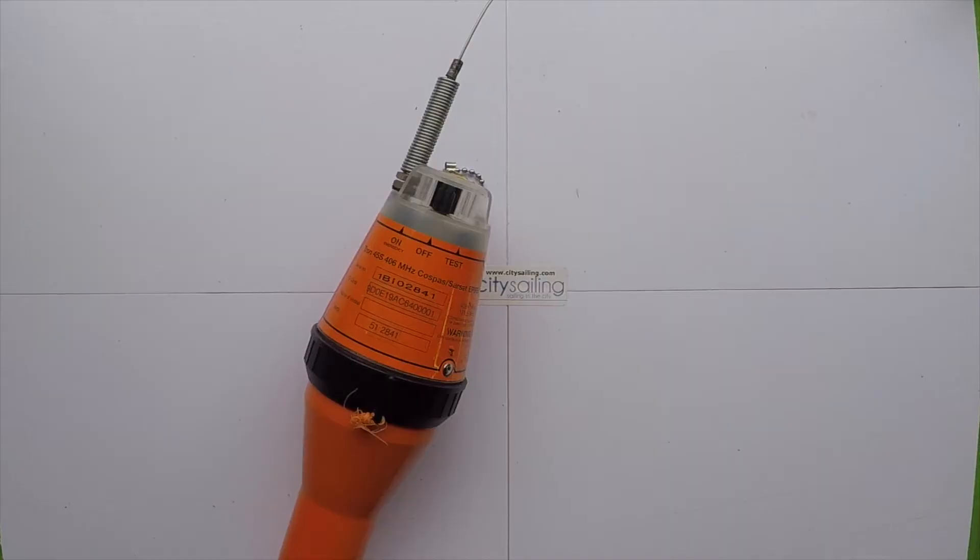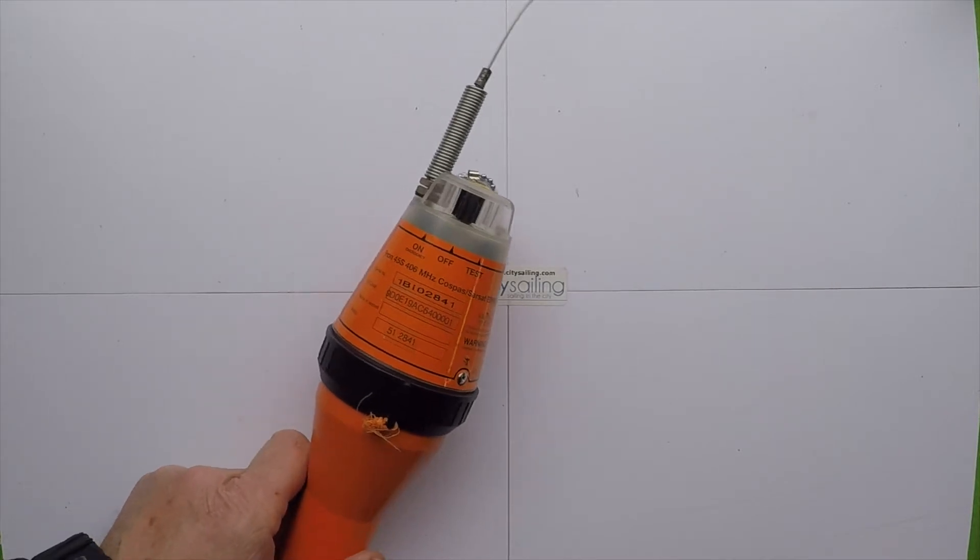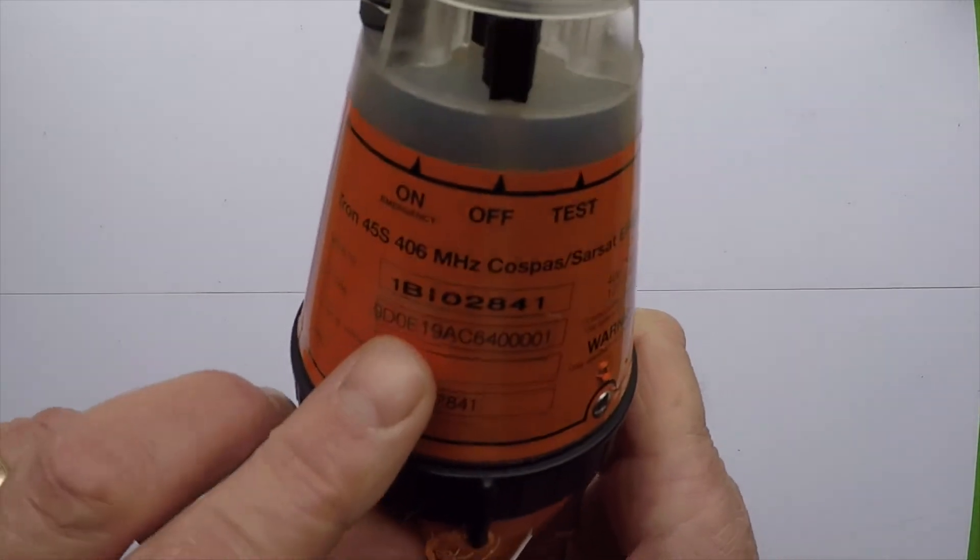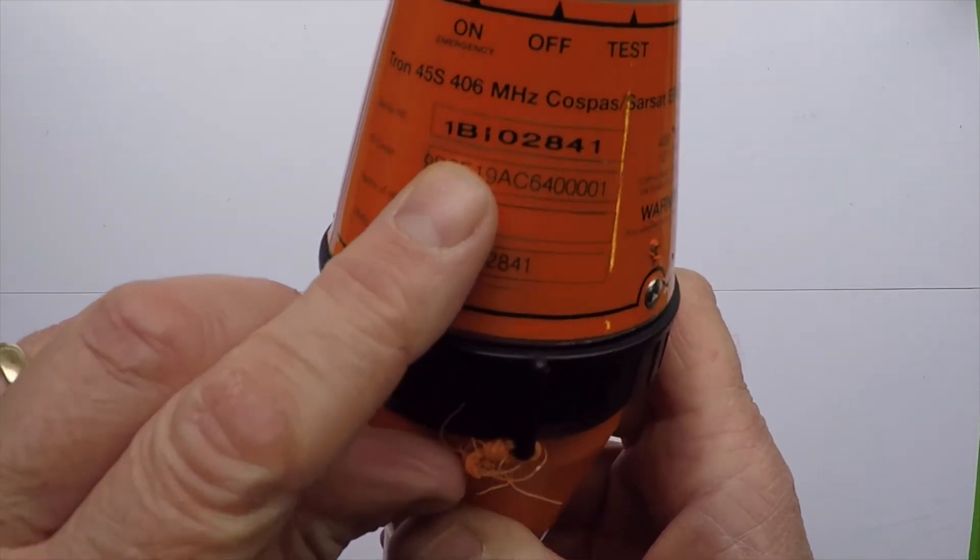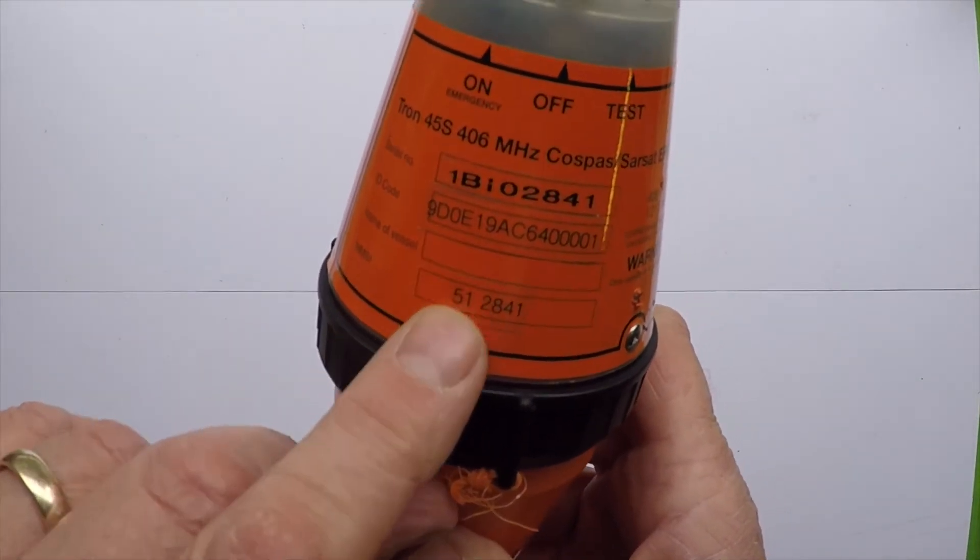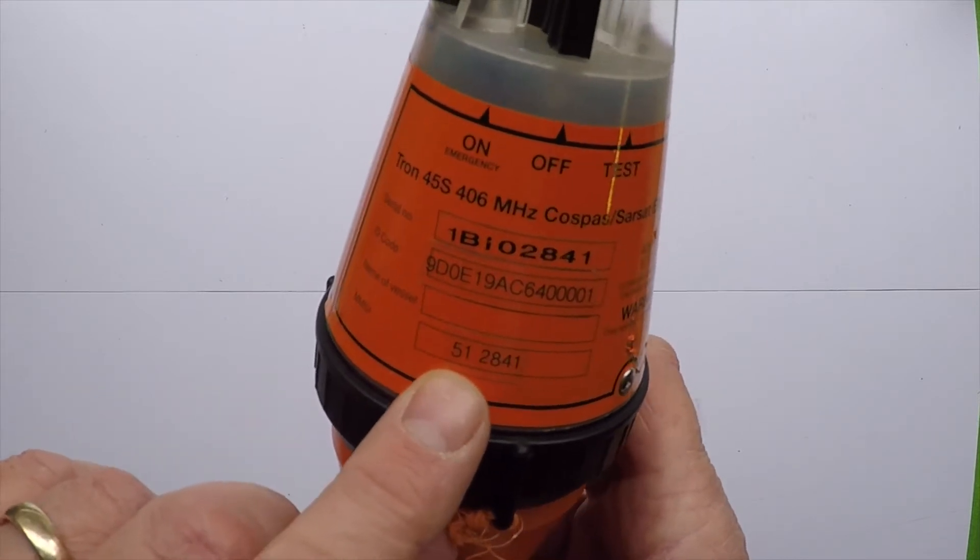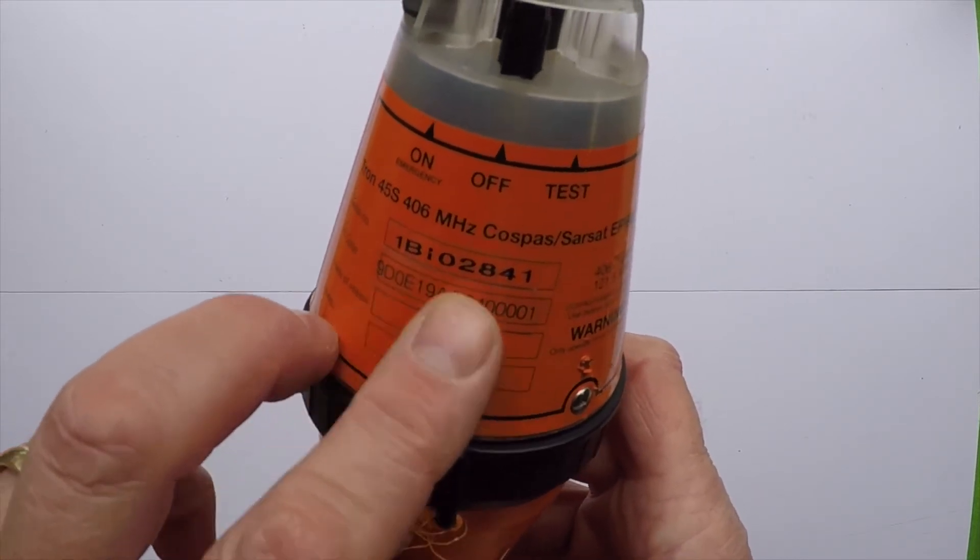I want to talk about EPIRBs - emergency position indicating radio beacon. This is a real EPIRB which I've decommissioned. As we can see here, it has a serial number, an ID code, and MMSI number, and the serial number we need to register it when we buy our EPIRB.